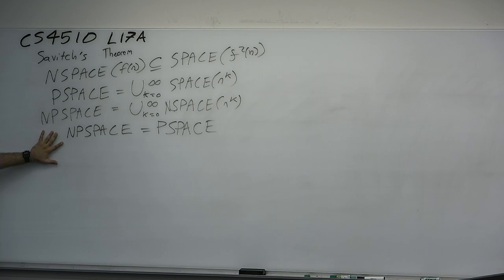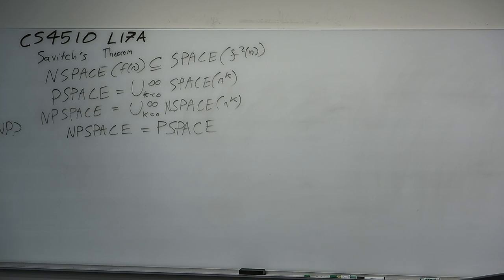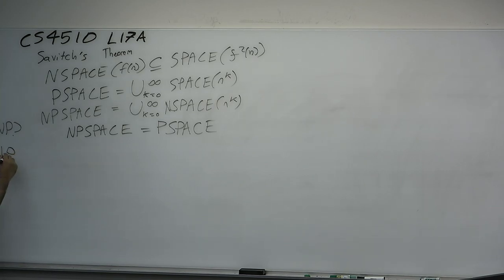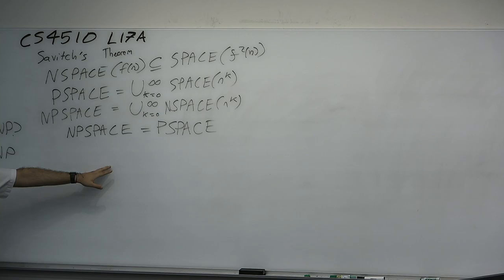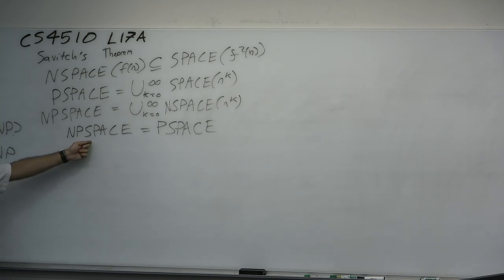Two reasons this is significant. One, we can prove it — we can't prove P versus NP, but we can prove NPSPACE = PSPACE. Two, it's the opposite of what we might expect: we think P ≠ NP, but we're able to prove the opposite for space. Non-determinism gives only a polynomial speedup for space, but it appears to give an exponential speedup for time — it doesn't appear to give only a polynomial speedup for space.